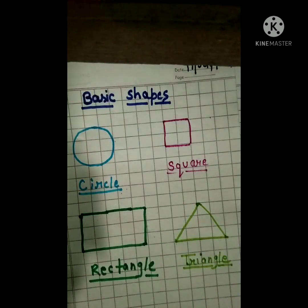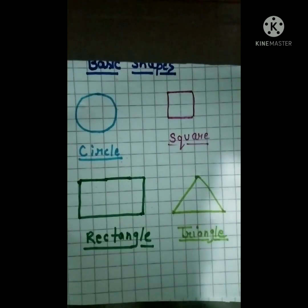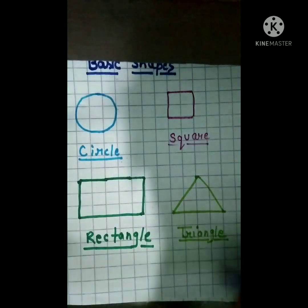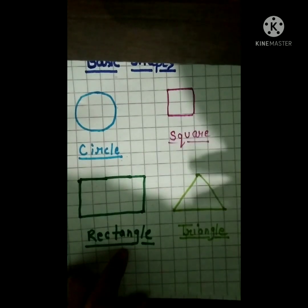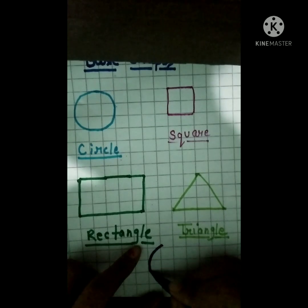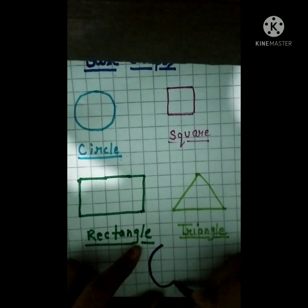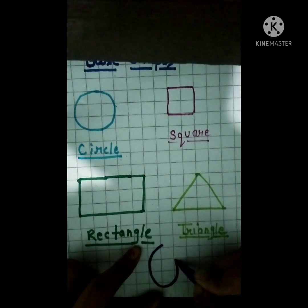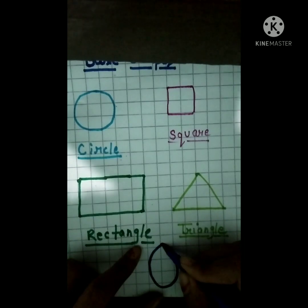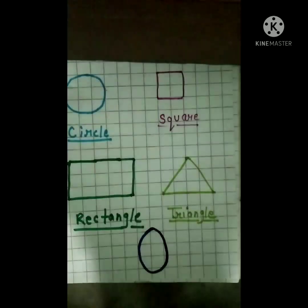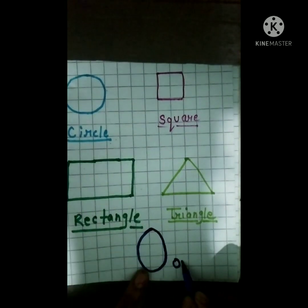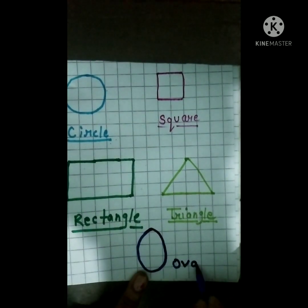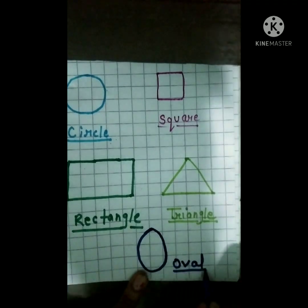And last shape is oval shape. Oval shape — how is it? It's not a circle. Oval shape. O-V-E-L — oval shape.